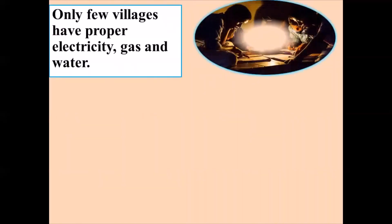Only few villages have proper electricity, gas, and water. All of you have electricity in your house, you all have gas — that means your mother cooks food on the gas. So all of you have gas and water in your house. But in villages, they don't have proper electricity, gas, or water. There are only few villages that have proper electricity, gas, and water.